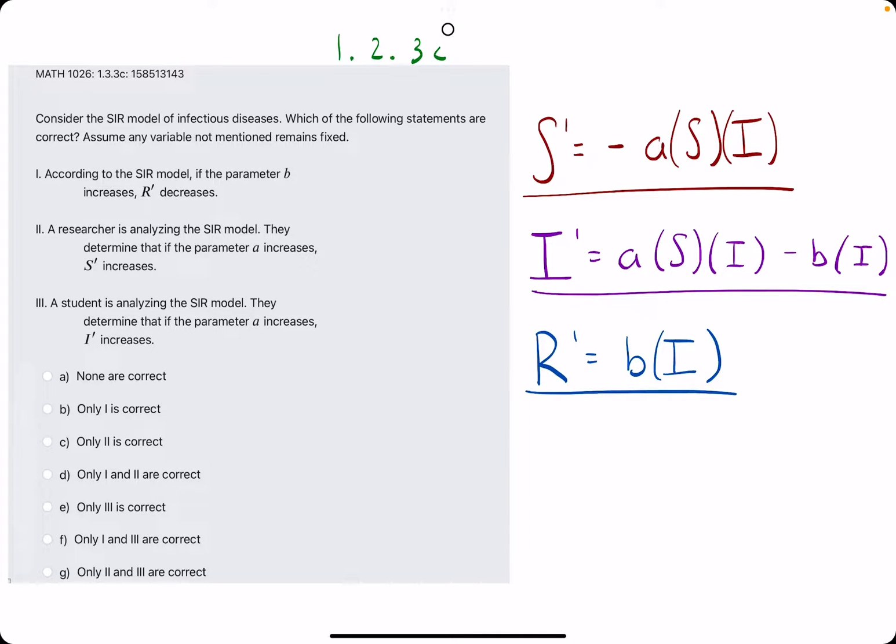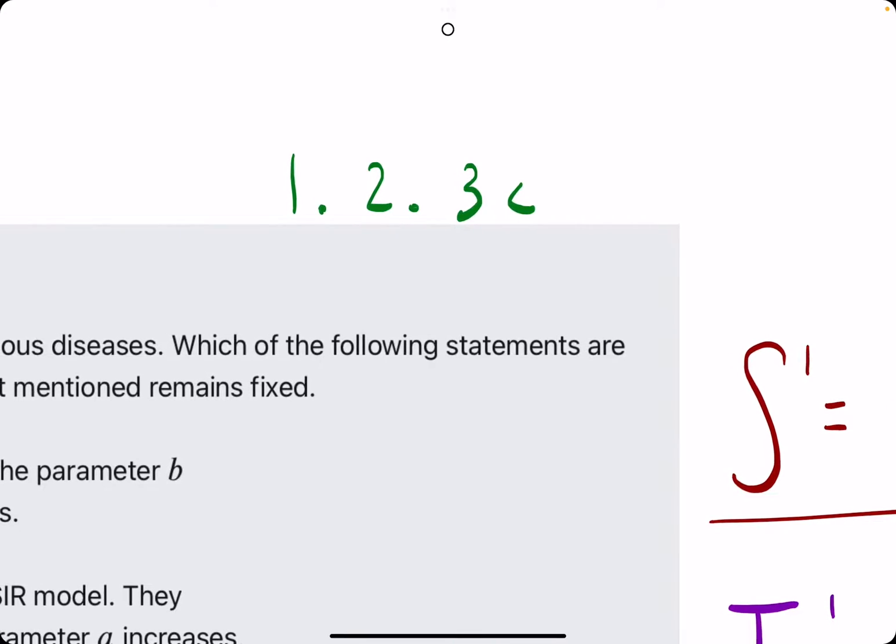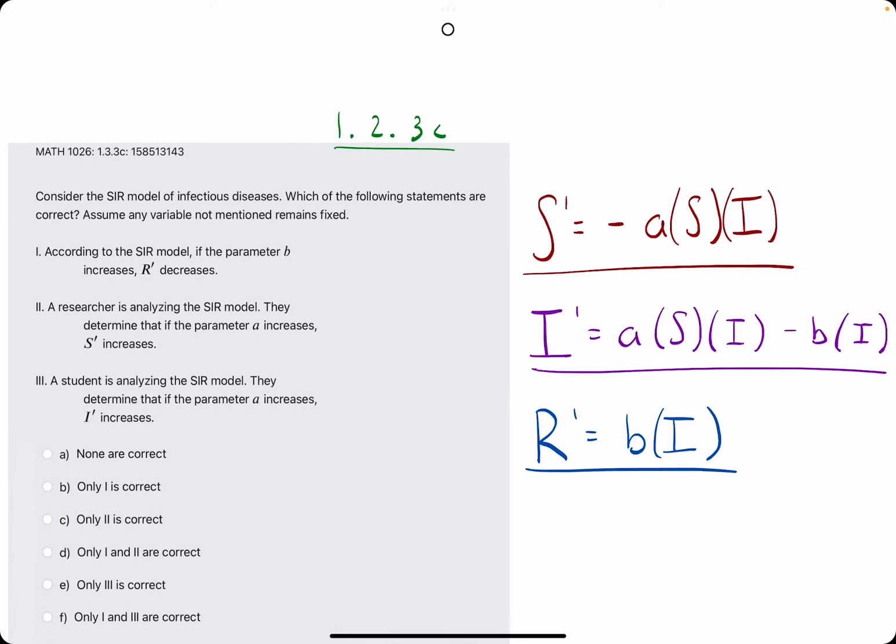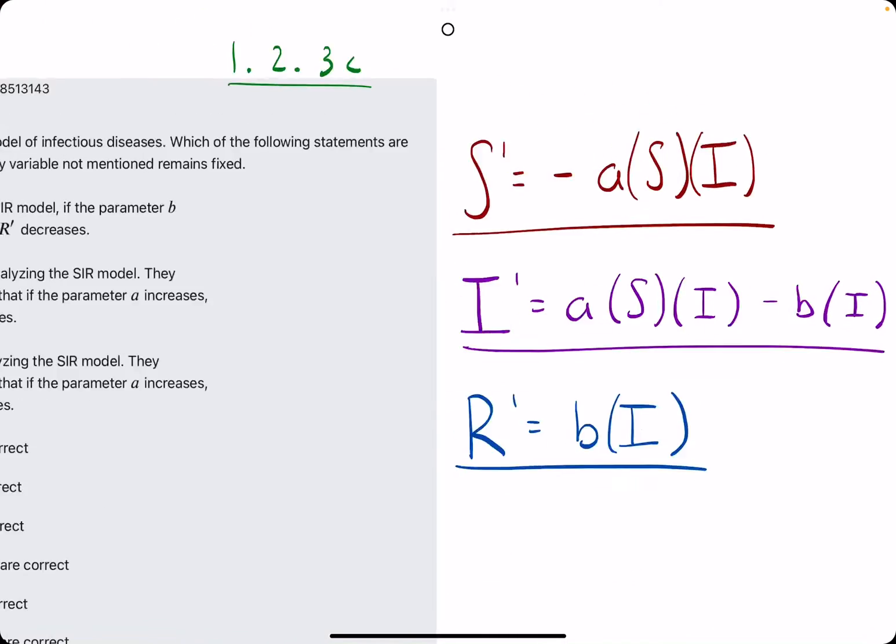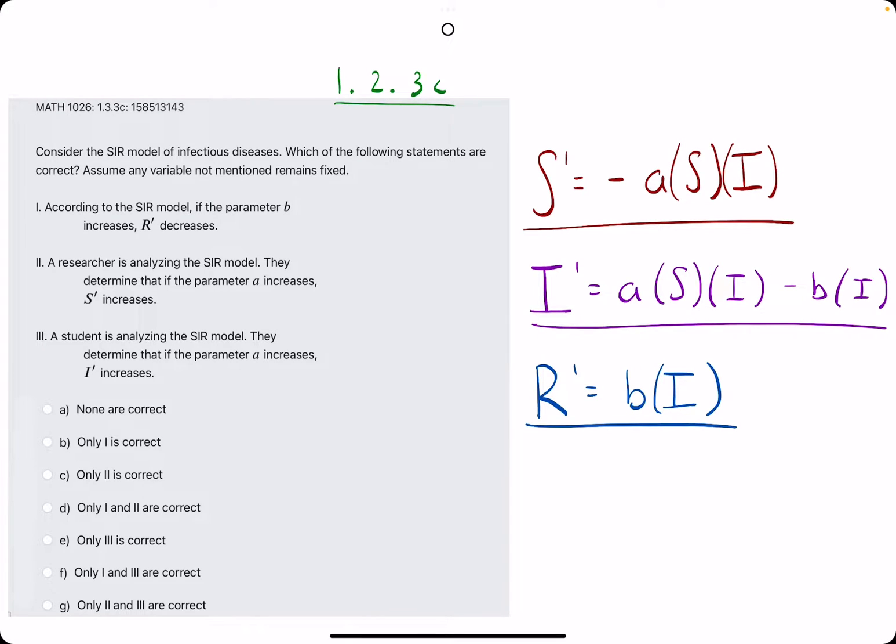In this problem we'll be using very similar ideas to the ones we saw in problem 1.2.3C, except here we're considering the SIR model and trying to identify which of these statements are true.